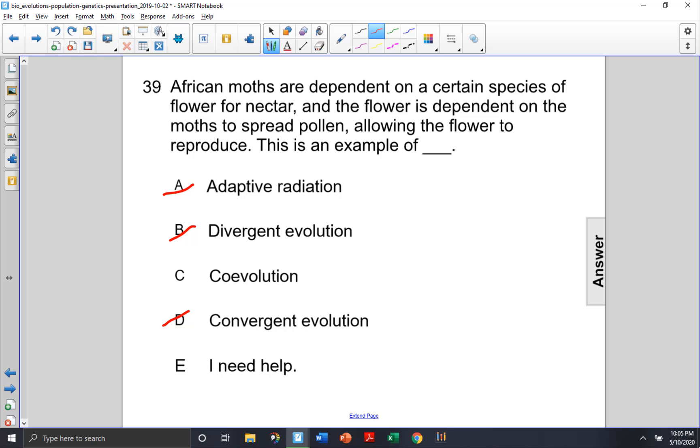The traits are complementary to each other because the flower depends on the moth and the moth depends on the flower, so it is an example of co-evolution.